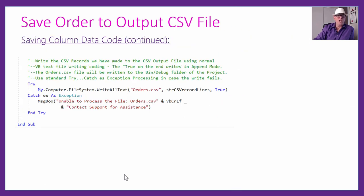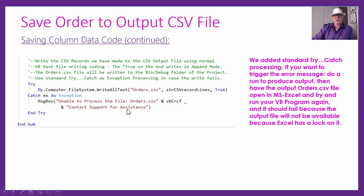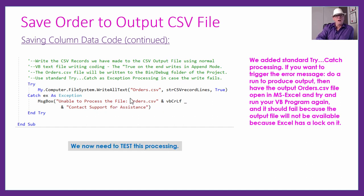We write the big formatted string out to the orders.csv file using try-catch. If all goes well, the whole multi-line string gets written out; otherwise a message box pops up. One way to trigger that error message is to have the orders.csv file open in Excel — Excel puts a file lock on it, preventing other applications from writing to it, so trying to run the program while the file is open in Excel will trigger the exception path.